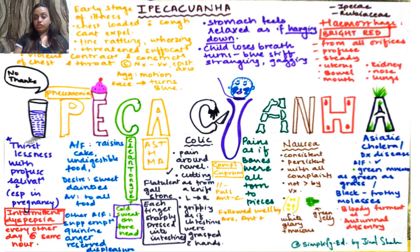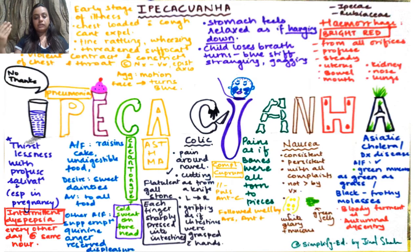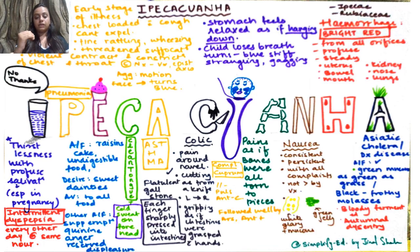Compare Ipecac with Antimonium Crudum for GI, Antimonium Tartaricum for respiratory, and Pulsatilla for GI. Ipecac is followed well by Arsenic and Antimonium Tartaricum. Ipecac is for the initial stages of respiratory infections, while Antimonium Tartaricum is for later and terminal stages. If the remedy is Ipecac and it is correctly chosen, you may not need Antimonium Tartaricum at all.